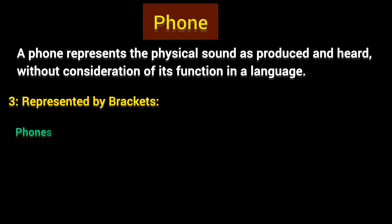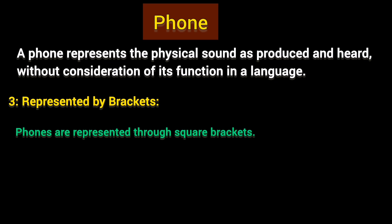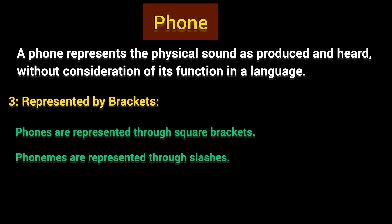Another key characteristic is that phones are represented through square brackets — whereas phonemes are represented through forward slashes. So representation by brackets is one of the main characteristics of a phone. I hope you have enjoyed this lecture. Please don't forget to like and subscribe to my channel. Thank you.